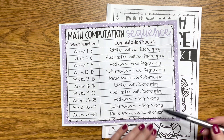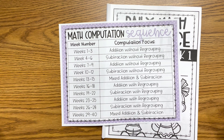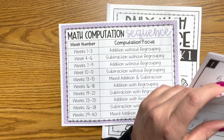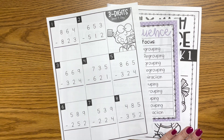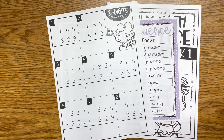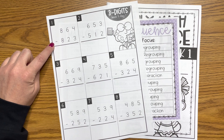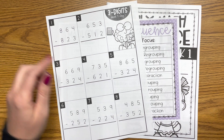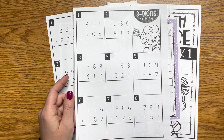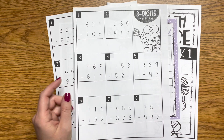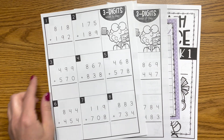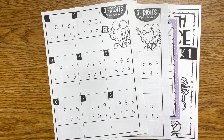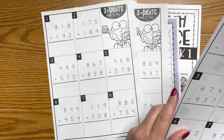I've printed off other pages to show you the progression. The book shown has addition without regrouping. Then there's subtraction without regrouping, then mixed addition and subtraction without regrouping, and then addition with regrouping starting at week 16. Depending on what your students need, you can start at week one or jump to week 16.